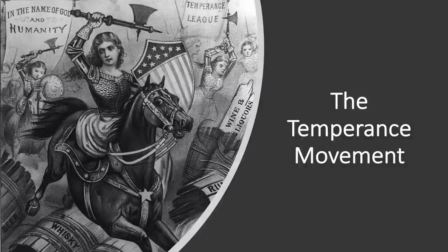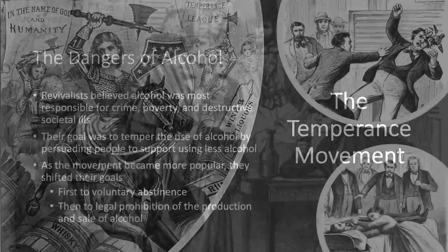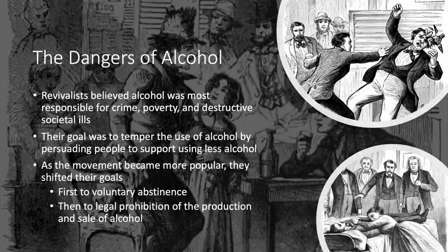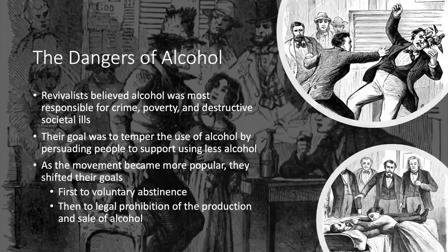With such strong philosophical and religious beliefs, people turned their attention to issues they felt should be addressed. One such issue was the consumption of alcohol, known as the Temperance Movement. For revivalists, the one thing most responsible for crime, poverty, and destructive societal ills was alcohol. Their goal was to temper — to act as a neutralizing or counterbalancing force — and persuade people to consume less alcohol. As the movement grew, goals shifted from voluntary abstinence to legal prohibition, formally forbidding by law the production and sale of alcohol.